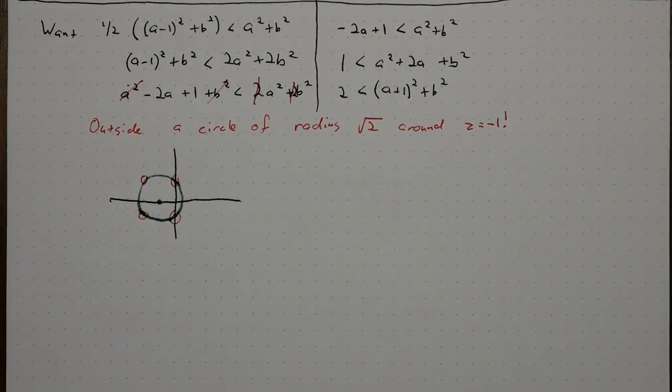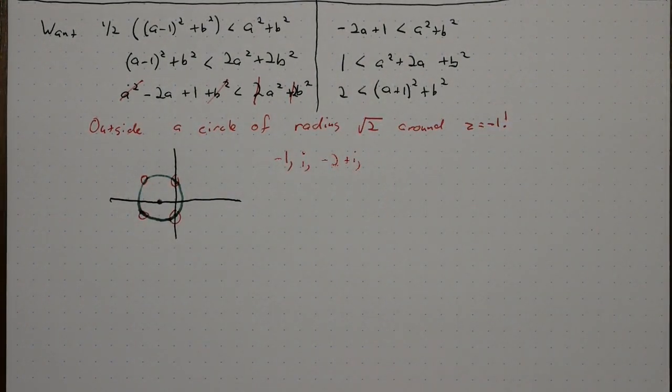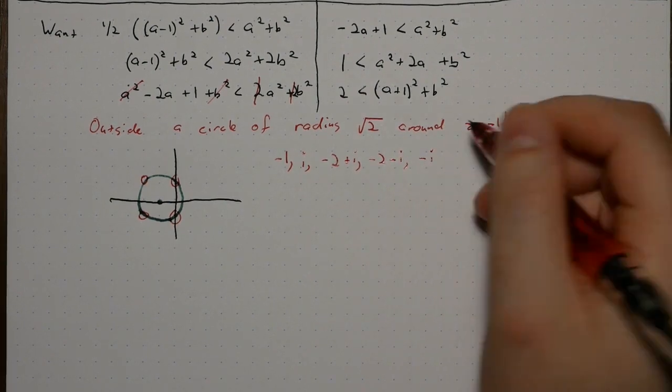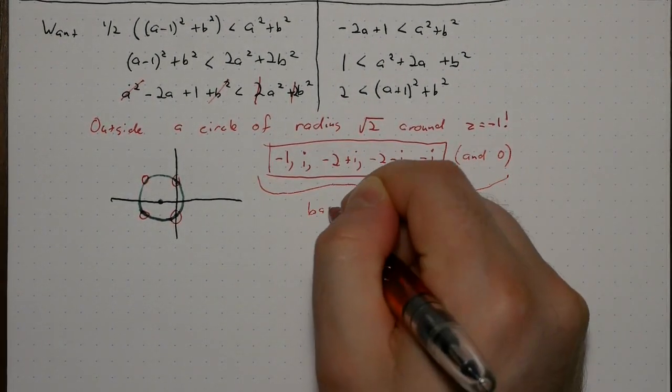This was for the mismatch case, so we really only have to worry about negative 1, i, negative 2 plus i, negative 2 minus i, and negative i. Oh, and 0 from the other case. These are the base cases for our induction.